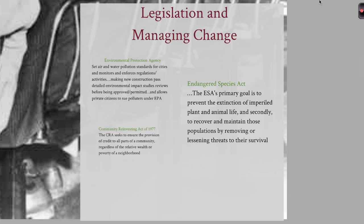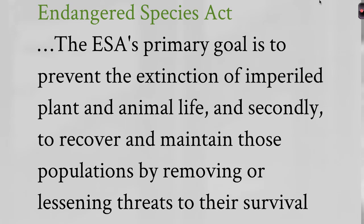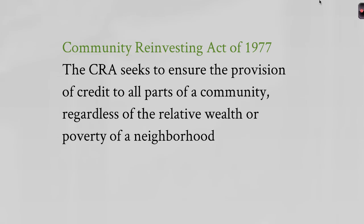Moving into the 1970s, there is other legislation that helps drive this climate of change. The Environmental Protection Agency sets standards for air and water pollution and requires approved studies before construction begins, and it allows private citizens to sue polluters. The Endangered Species Act takes steps to protect plants and animals in danger of extinction. The Community Reinvestment Act of 1977, passed under Carter, requires banks to make credit available to prevent decay in low-income neighborhoods and inner cities.